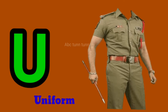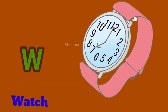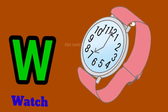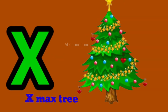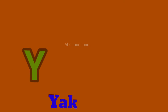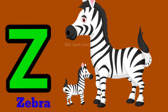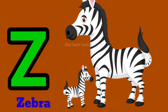U for uniform. V for van. W for watch. X for x-ray. Y for yak. Z for zebra.